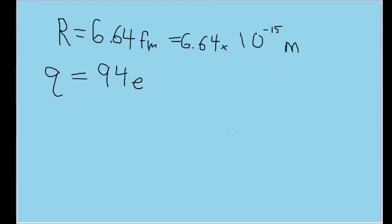In this problem, we have a plutonium-239 atom with 94 protons. The atom's nucleus has a radius of 6.64 femtometers, or 6.64 times 10 to the negative 15 meters.